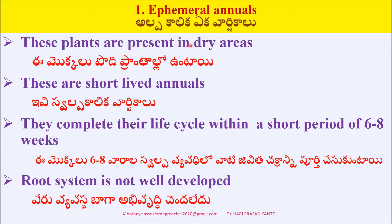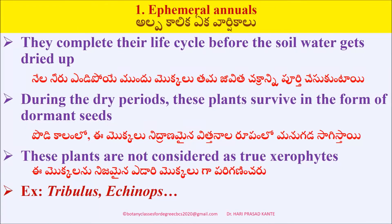These plants are present in dry areas. These are short-lived annuals. They complete their life cycle within a short period of six to eight weeks. In this plant, the root system is not well developed.